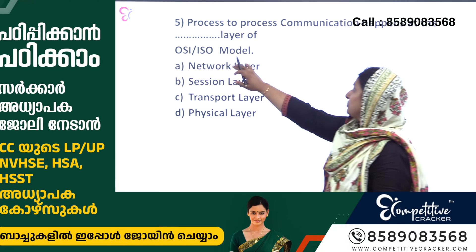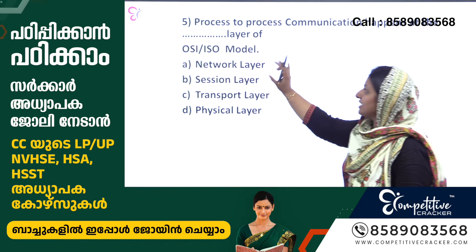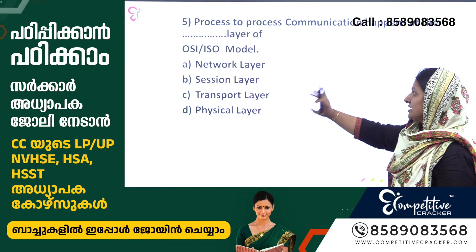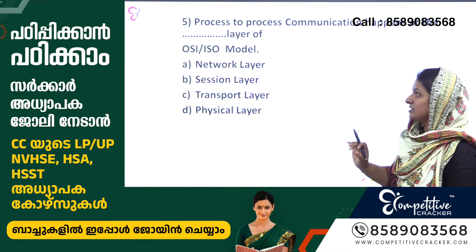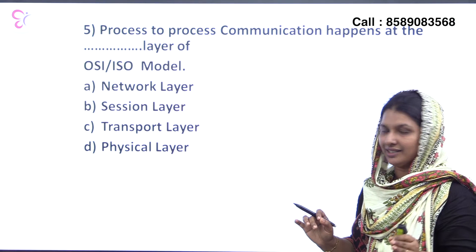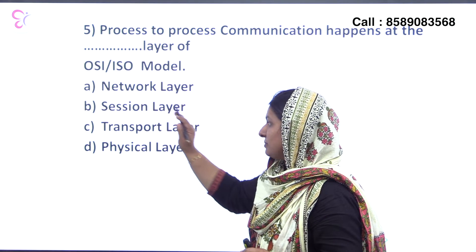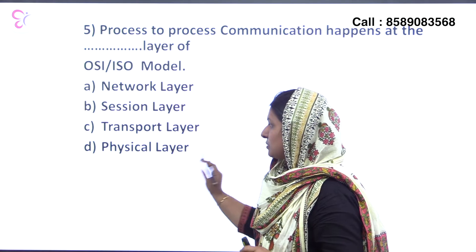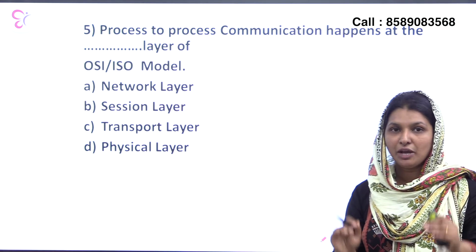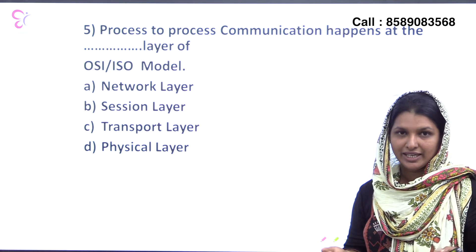Fifth question: process-to-process communication happens at the dash layer of the OSI/ISO model. The OSI model has 7 layers. The options are: Option A network layer, Option B session layer, Option C transport layer, Option D physical layer.